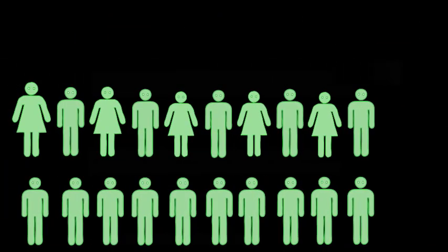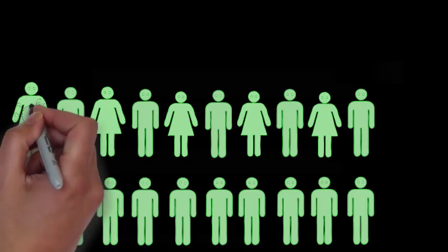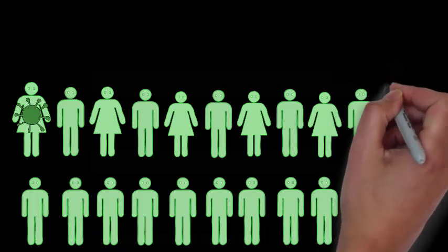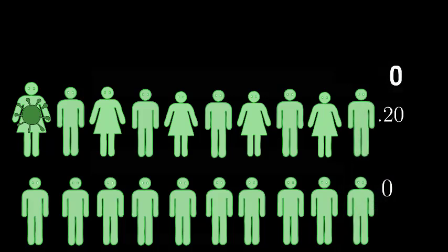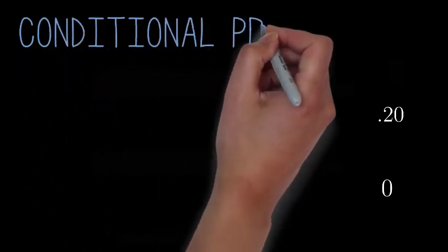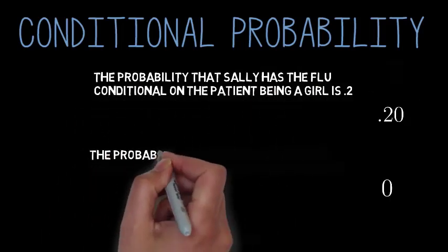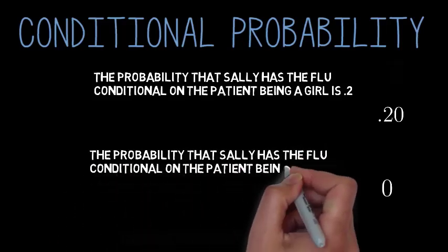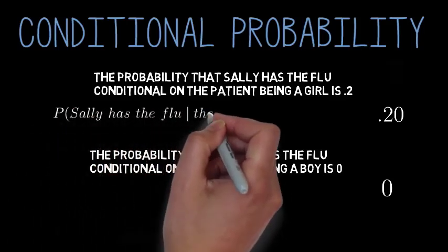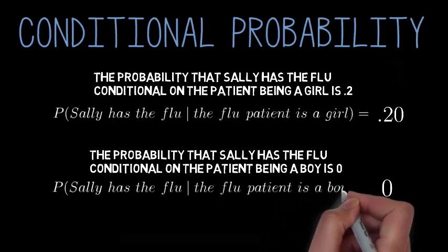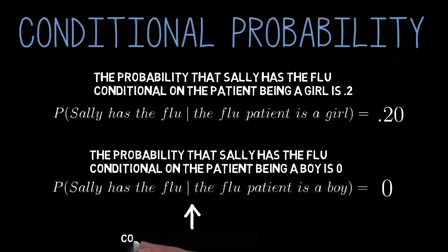Suppose now that there are 5 girls and 15 boys in the class. You don't know whether the class's flu patient is a boy or a girl, but if you were to find out that the patient was a girl, your probability that Sally has the flu would go up to 1 in 5, or 20%, or .2. On the other hand, if you were to find out that the patient was a boy, your probability that Sally has the flu would go down to 0. Because these things are still iffy — you don't yet know whether the flu patient is a boy or a girl — we'll call these things conditional probabilities. Your probability that Sally has the flu conditional on the flu patient being a girl is .2, and your probability that Sally has the flu given that the flu patient is a boy is 0. As a shorthand, we'll write p of Sally has the flu given that the flu patient is a girl equals .2, and p of Sally has the flu given that the flu patient is a boy equals 0. The little vertical line tells you that we're talking about conditional probabilities.